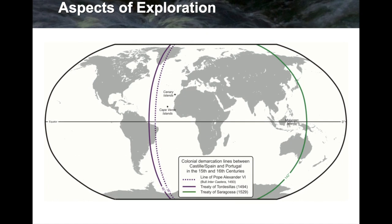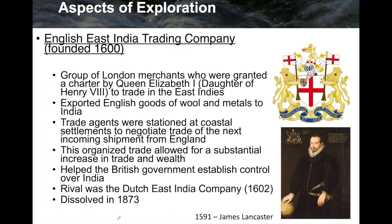Here is a map of the Treaty of Tordesillas. You can see the solid purple line on the screen. Basically, Spain would get everything to the west of the purple line and Portugal would get everything to the east. They didn't know how vast the South American continent really was, so Portugal only got this little piece — what is modern-day Brazil — and Spain got all the rest.